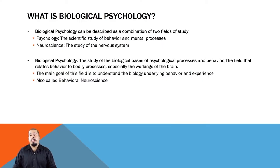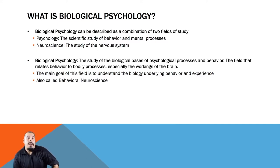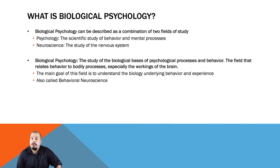Biological psychology is comprised of two fields. One being psychology, which is the scientific study of behavior and cognition or mental processes. The other field is neuroscience, a natural science that focuses on the structure and function of the entire nervous system. Biological psychology is the combination of these two fields. It focuses on how biological processes inside of our body and brain influence behavior and cognition and understand the neuroscience underlying behavior and experience.